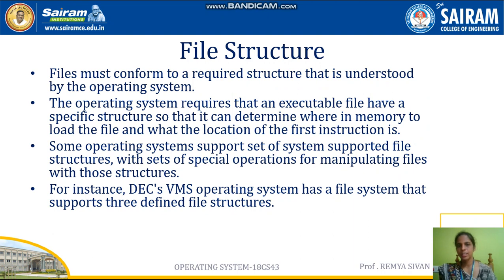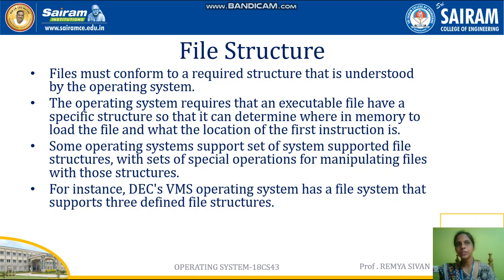A file must conform to a required structure that is understood by the operating system. For example, if your extension is .exe, then the content should not be text lines. The operating system requires that an executable file have a specific structure so that it can determine where in memory to load that file and what the location of the first instruction is. Each file should conform to the required structure: .txt means the content should be a set of lines, .c means the content should be a sequence of functions and procedures, and a binary file should have binary content.